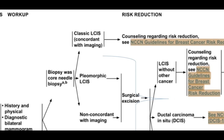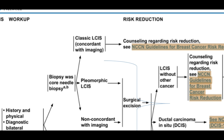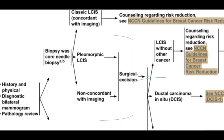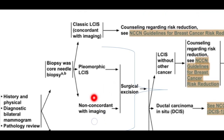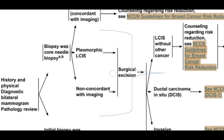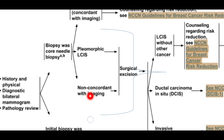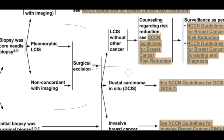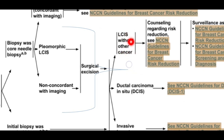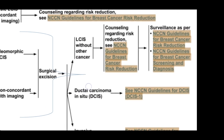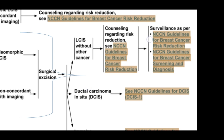If the carcinoma in situ has pleomorphic features — that is, cells different in size and shape — and may be similar to ductal carcinoma in situ, or if the mass shows features not concordant with the imaging, in these two conditions we have to do surgical excision. This excision may reveal classical lobular carcinoma in situ, ductal carcinoma in situ, or invasive cancer. If classical LCIS features only, surveillance is enough.